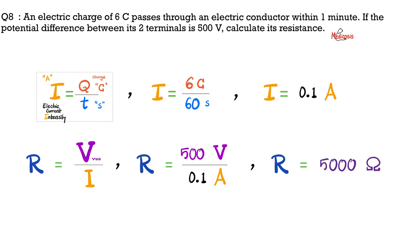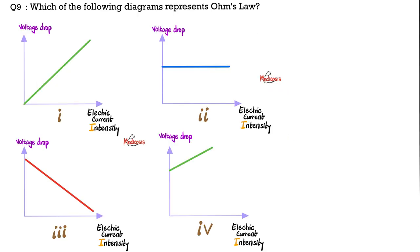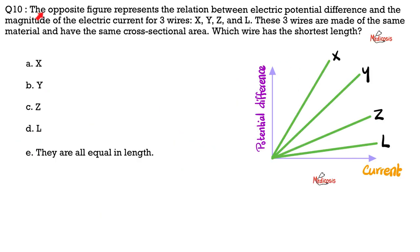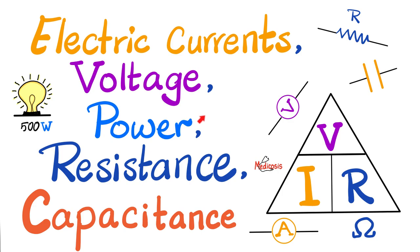Take a moment to pause and review. Question 9: which of the following diagrams represents Ohm's law? Let me know your answer in the comments. And question number 10: read it and let me know your answer in the comments. You will find the answer keys in the longer video titled 'Electric Current, Voltage, Power, Resistance, and Capacitance' in my physics playlist.